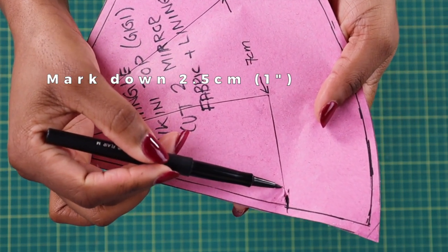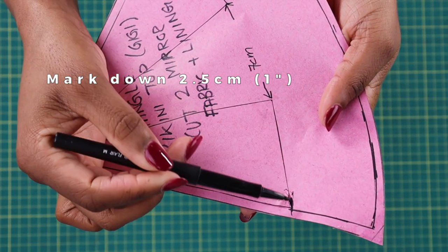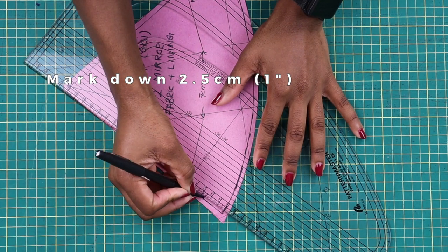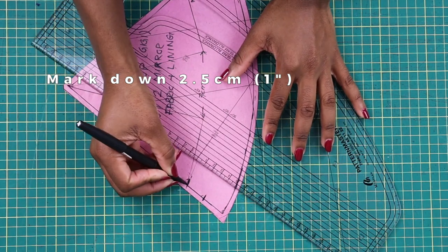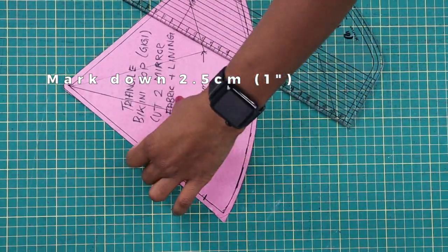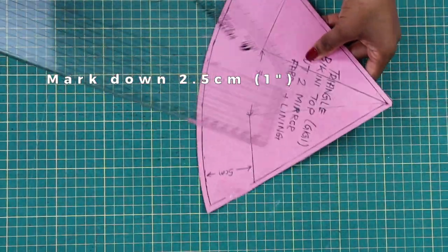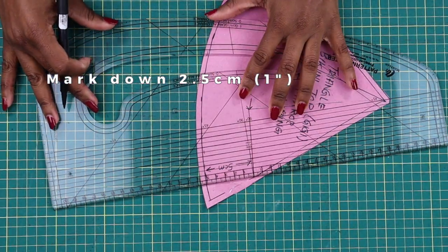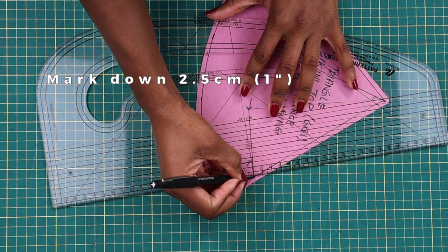From here where we have the original cap, go down two and a half centimeters. Same on the other side, two and a half centimeters. Now we're just going to do a notch.